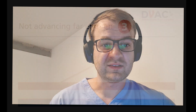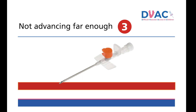Just as it's possible to advance too far, it's also possible to not advance far enough. In this situation, despite having had first flashback, if you try to advance the cannula tubing off the introducer needle, you'll simply be bouncing it off the near wall of the vein. This is redeemable by ensuring that after first flashback you advance at least the distance from the needle tip to the tubing — which varies significantly depending on cannula gauge — plus a couple of millimetres to allow for vessel wall thickness.